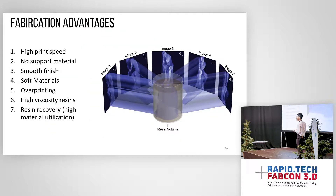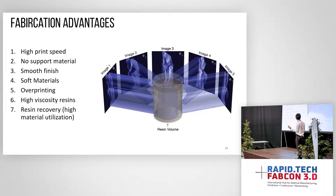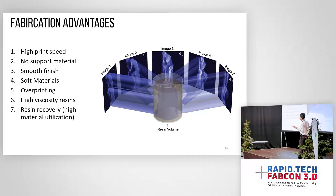In summary, this technique has a number of fabrication advantages. First, it's the fastest technique available — though not yet commercialized. It has no support material, so you get a net-shape part. You get a smooth finish, can print in soft materials, and can do overprinting to embed functional parts like electronics. Lastly, you can use very high viscosity resins — not possible in SLA or DLP due to hydrodynamic limitations — and you can reuse the resins afterwards.